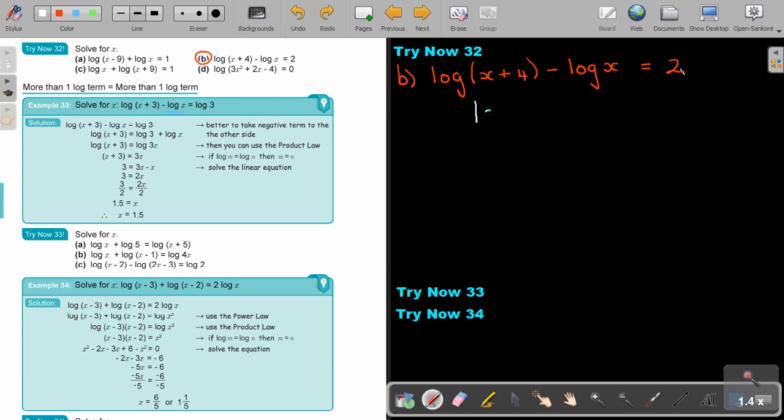So I'm just going to say log x plus 4 over x is equal to 2. Now, remember the base is 10. So if I go to 10, swap this 2 side to the power 2 equals x plus 4 over x.